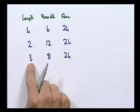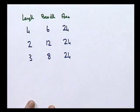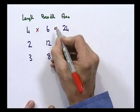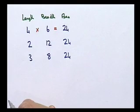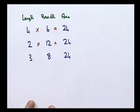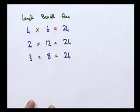And the third one, a length of 3, a breadth of 8, and an area of 24 square units. I don't think it takes a lot for us to see a pattern here. 4 times 6 is 24. 2 times 12 is 24. And 3 times 8 is 24.